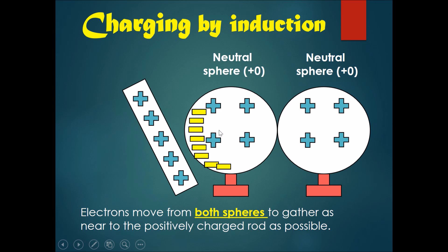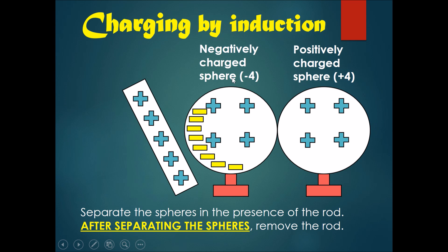So they will all gravitate towards the positively charged rod. On this side, the sphere on the left will be negatively charged, and the sphere on the right will be positively charged.